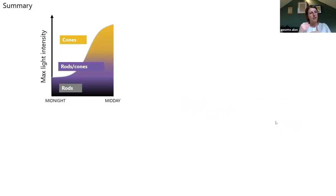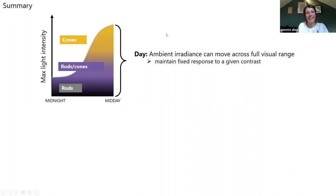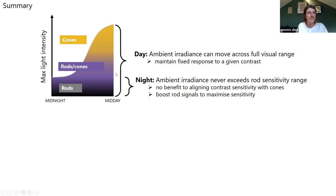What's happening here? It's useful to think about what happens in our visual environment over the course of the day. In the day, irradiances can generally be brighter, but this is a change in maximum intensity, not necessarily a constant intensity. Depending on behaviour or moving cloud cover, irradiance can theoretically move across the whole visual sensitivity range in the daytime. There's an obvious utility in maintaining a fixed response to a given contrast to ensure stability as we move from dim to bright environments. At nighttime, irradiance never really exceeds the rod sensitivity range, so there's no clear benefit in aligning contrast sensitivity with the cone photoreceptors. Boosting rod signals to maximize sensitivity in low light maybe makes sense.